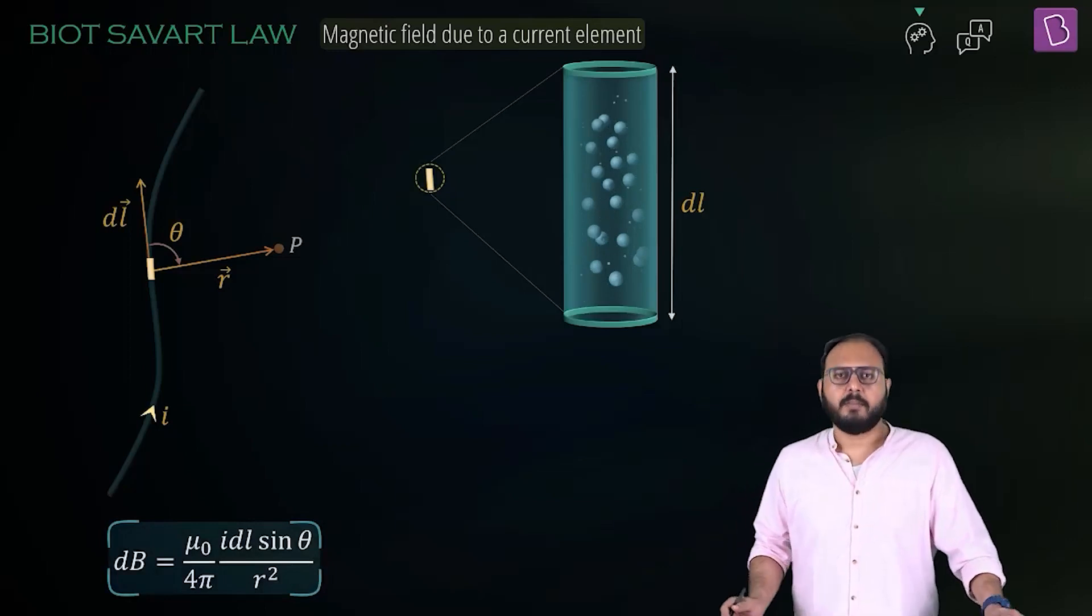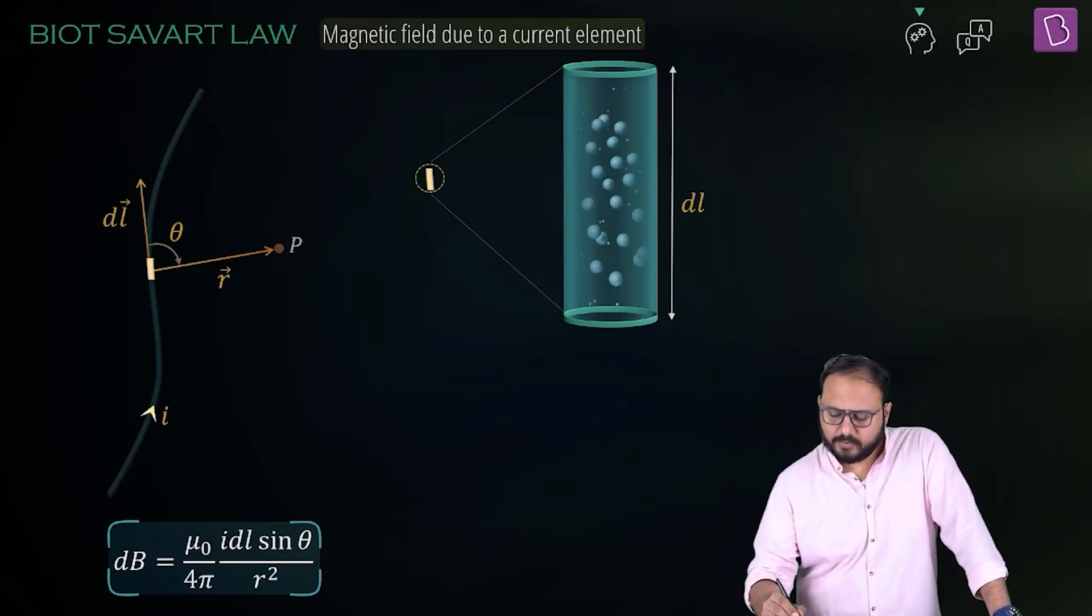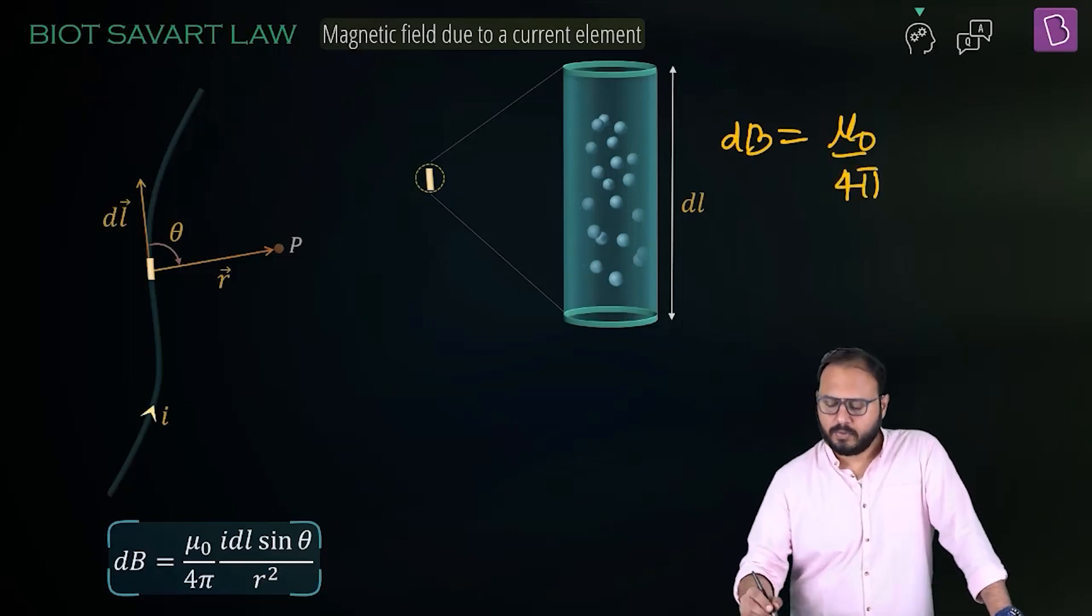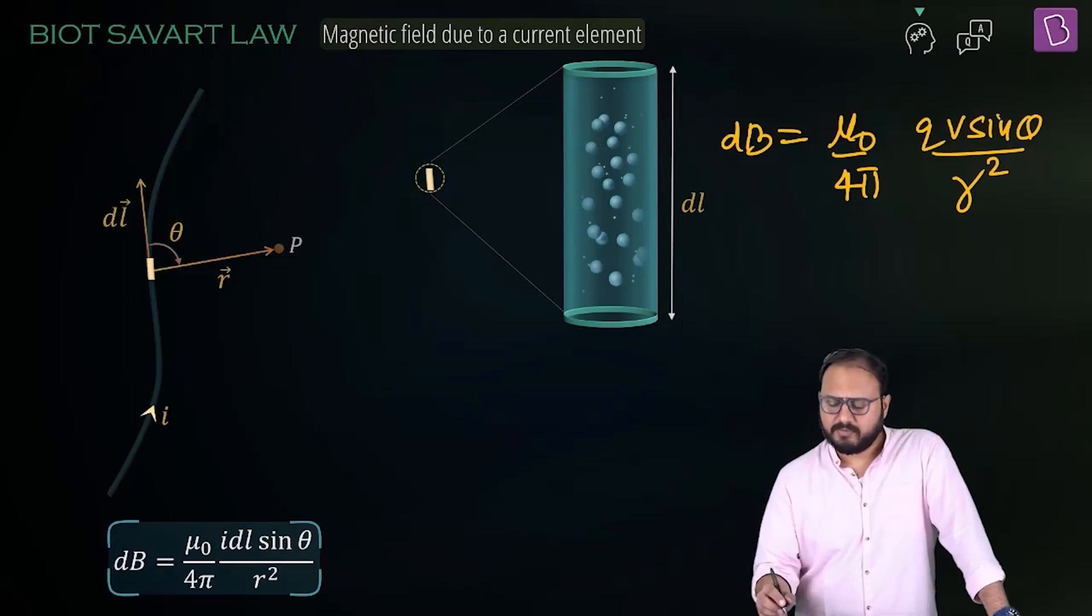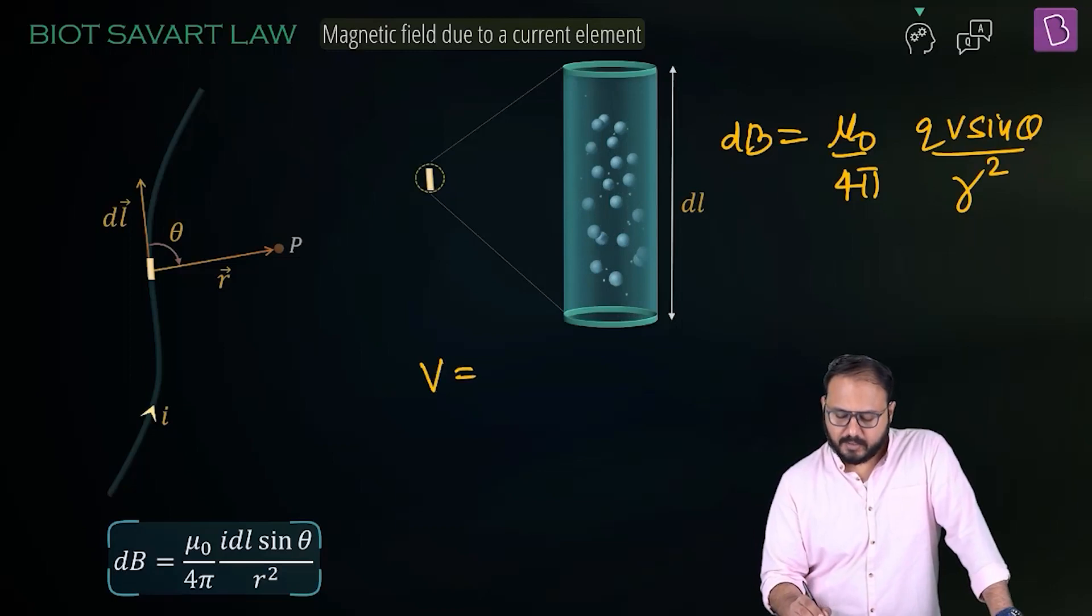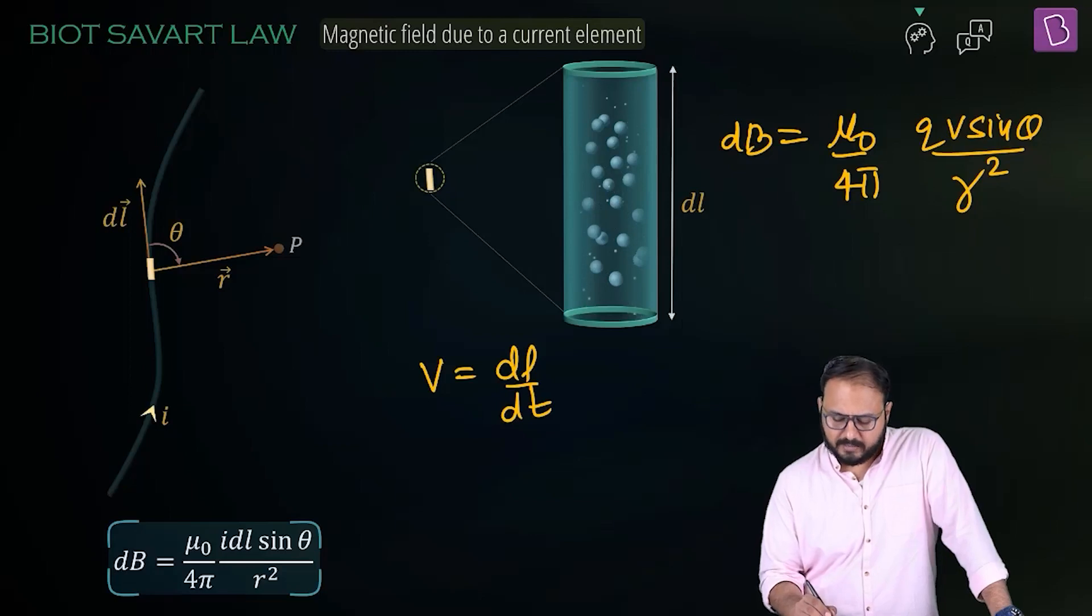And if you use that, the magnitude is coming out to be μ₀/4π IDL sin θ / R². Sir, can you tell us how did this happen? Okay, dB = μ₀/4π QV sin θ / R². This you know, right? So what happens is V = DL/DT for a very small distance. And V DT is equal to DL.